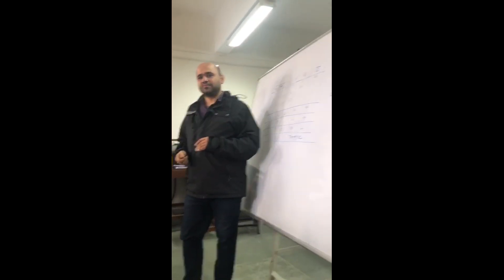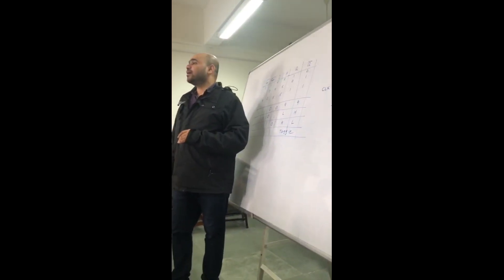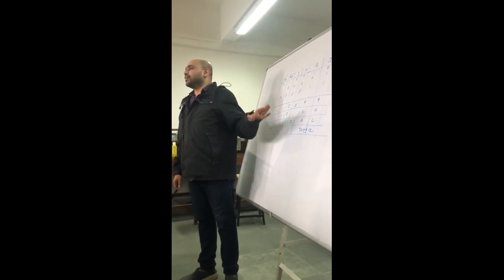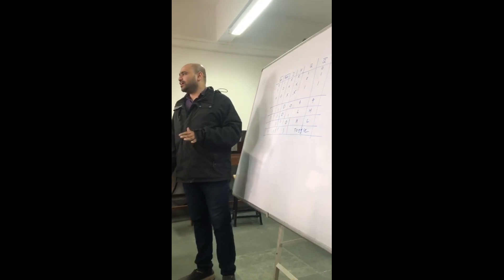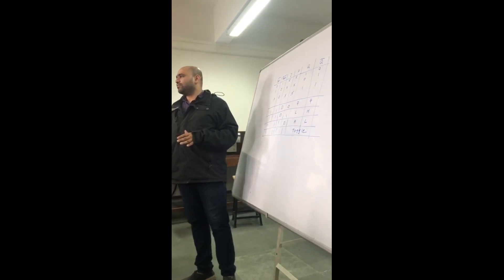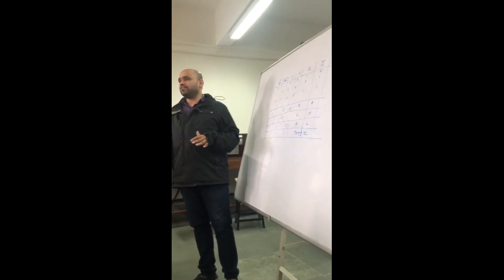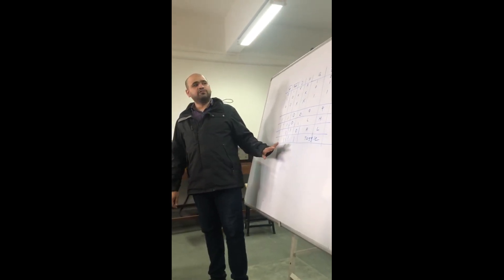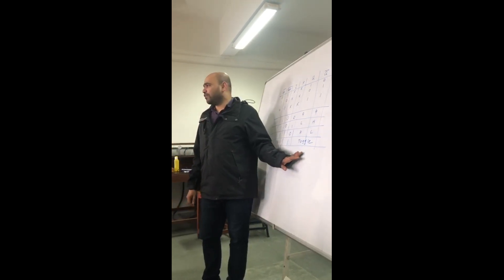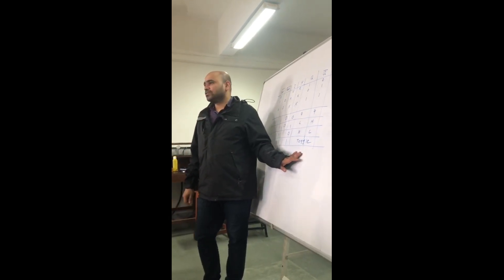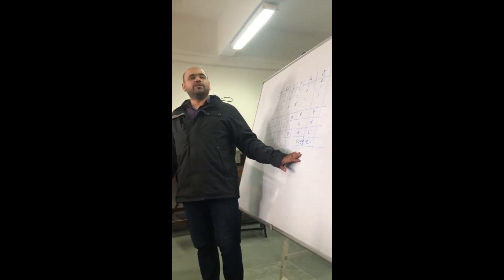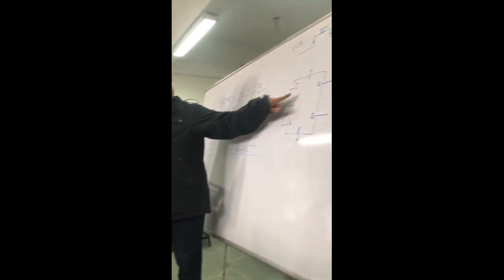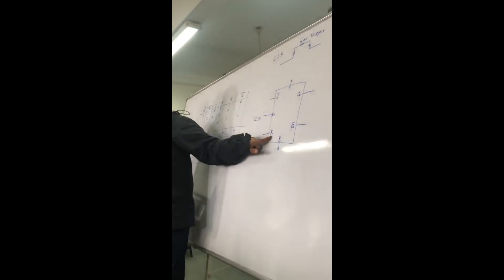Okay, so in the class yesterday we saw SR flip-flop, i.e., Set-Reset flip-flop. Now this is experiment 5. Today's experiment is JK flip-flop. So it is similar to SR but instead of Set and Reset we call them J and K.